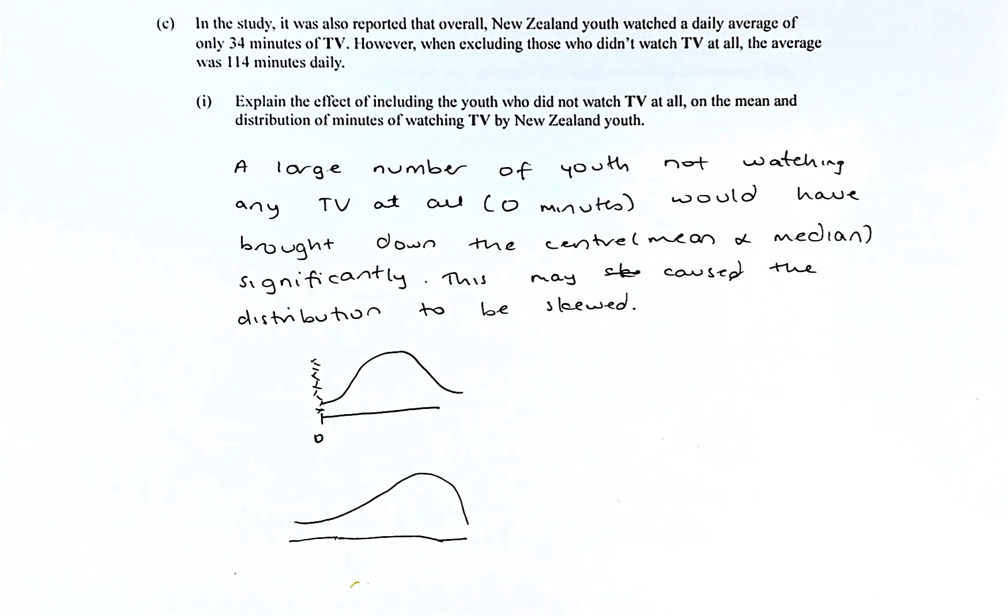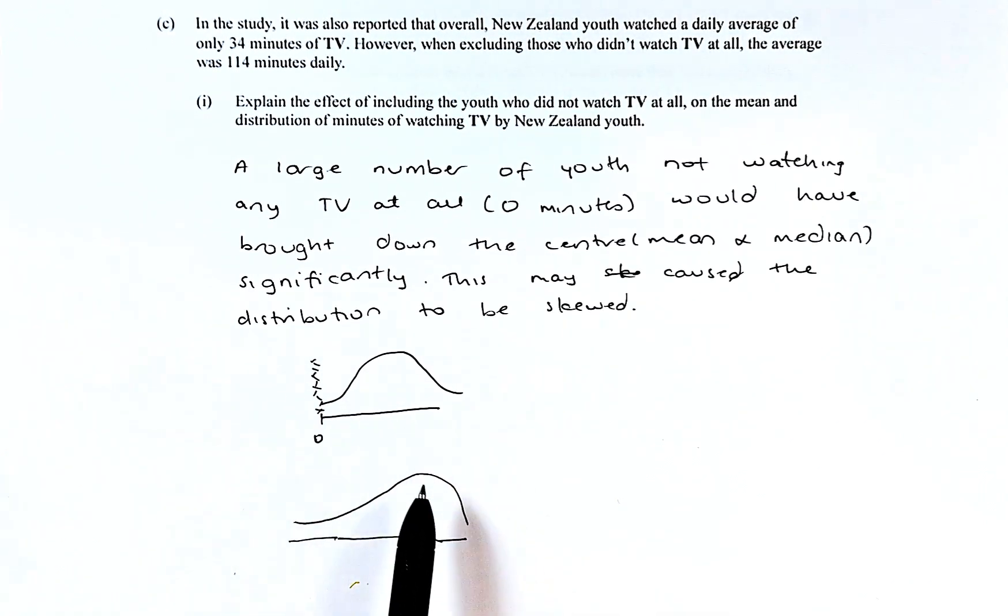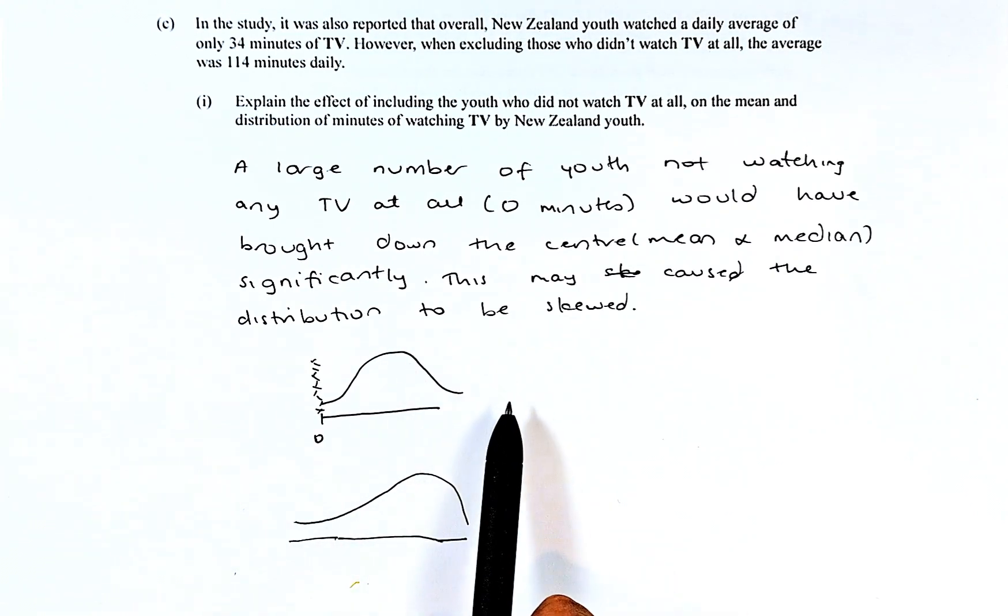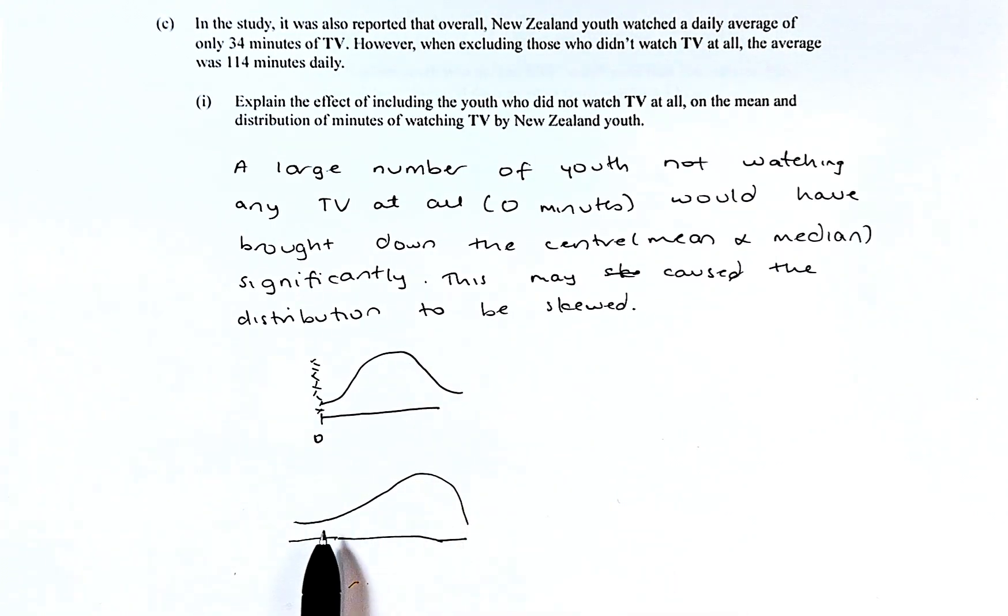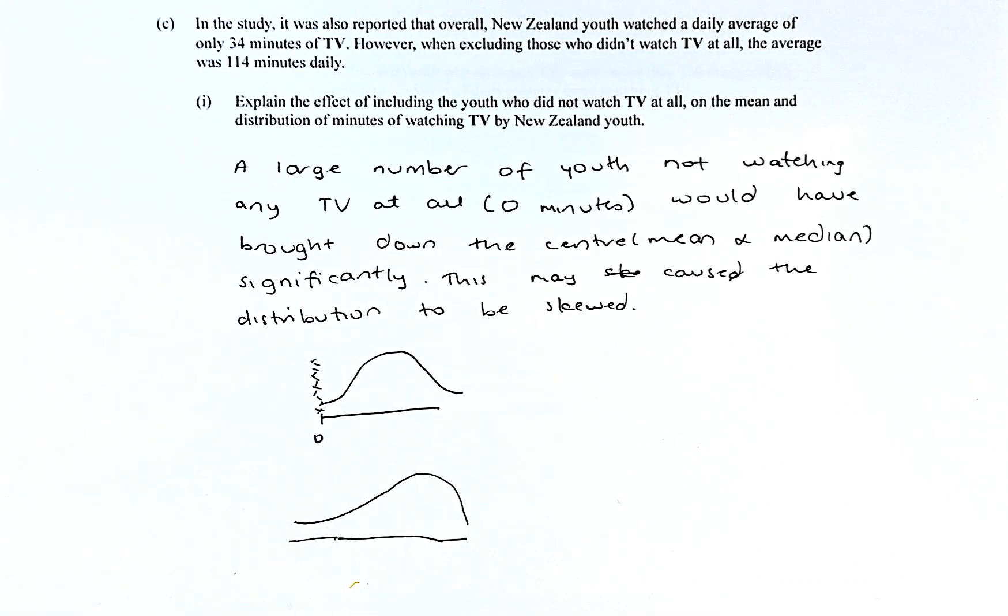When you drop the mean and median, if you include them, the distribution will not be more normal shape. It will be more like this because more numbers of zero are around here, so there are more people on this side. So instead of normal, it will be more skewed. That is the first part. You can get it right as an achieve.